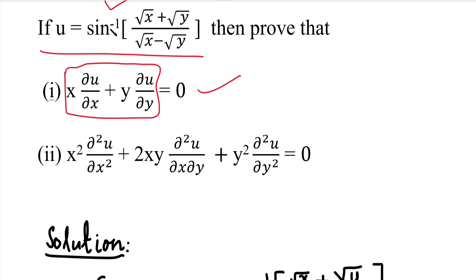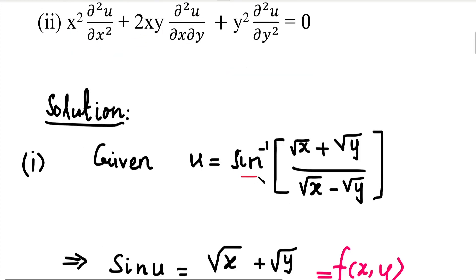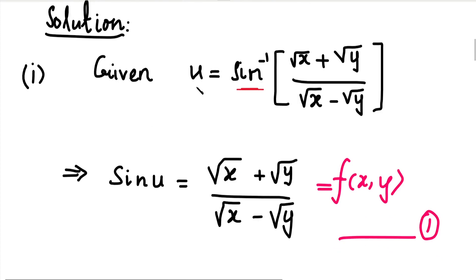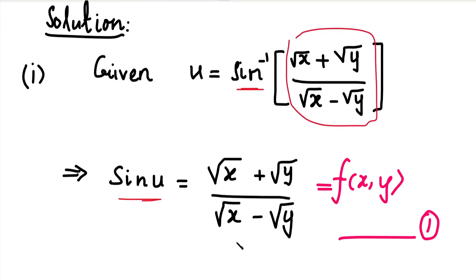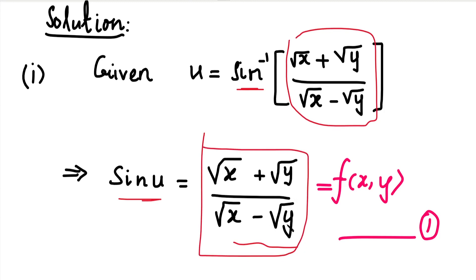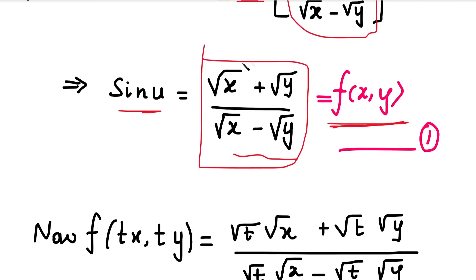By applying the inverse function: if u equals sin inverse of f(x, y), then sin(u) equals f(x, y). So f(x, y) is the expression (root x plus root y) divided by (root x minus root y). We now check whether this f(x, y) is a homogeneous function.